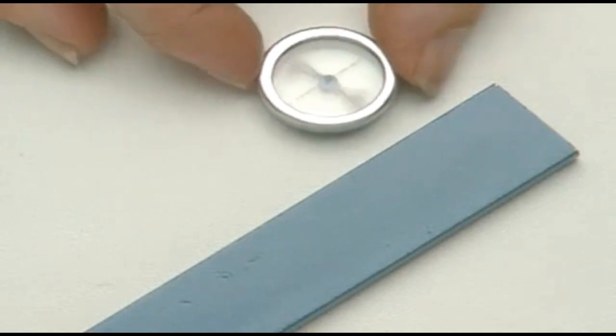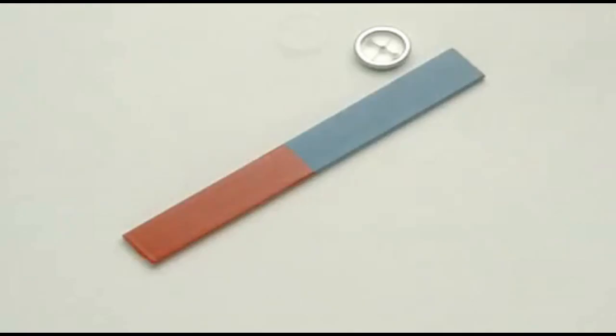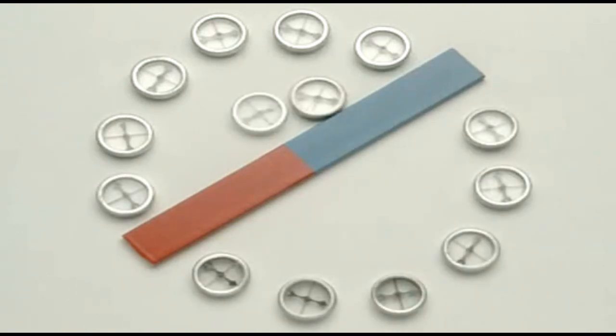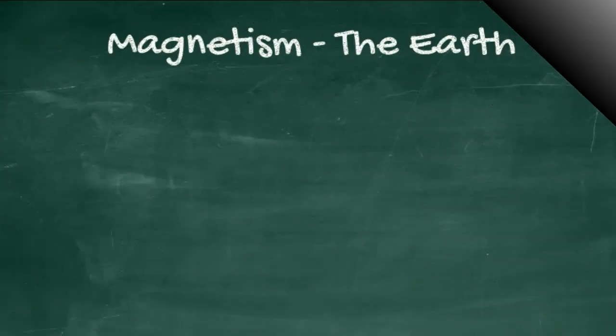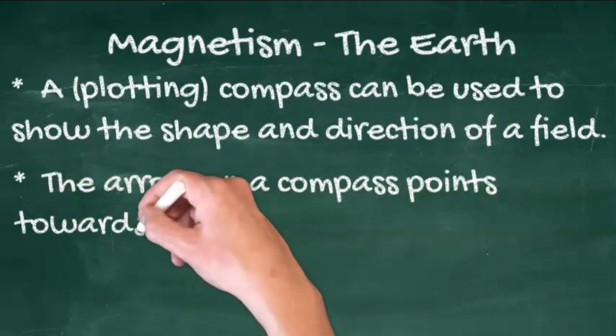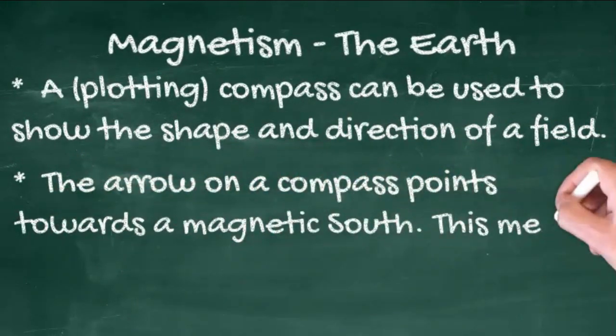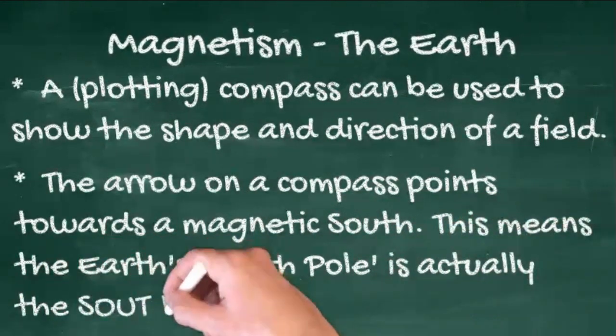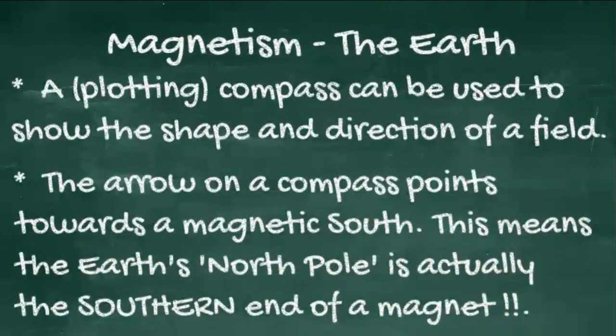Magnetic fields are invisible, but small compasses show up a pattern. Each curved line is a line of magnetic force. The red pointed end of an arrow on a compass points towards a magnetic south. This means the earth's north pole is actually a magnetic south.